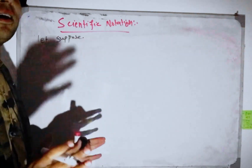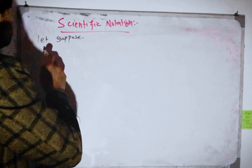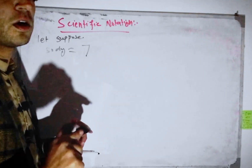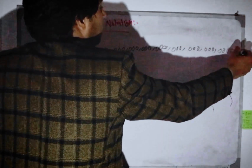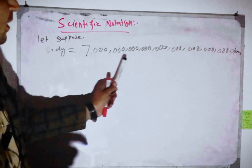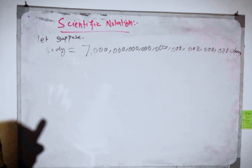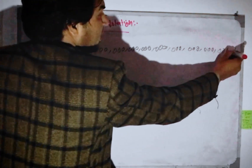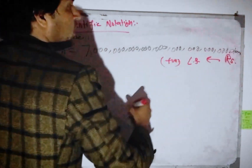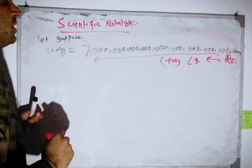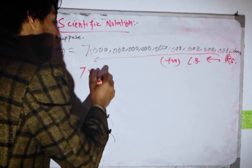Let's suppose the earth and planets are given as a story. If a human being has a body, the number of atoms in a single human body is approximately 7 multiplied by 10 power 27.